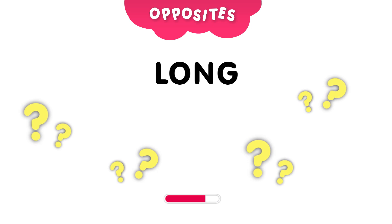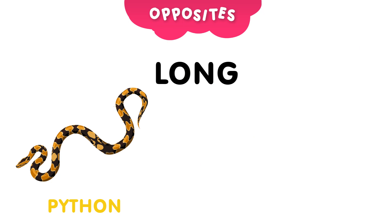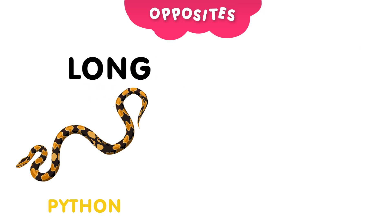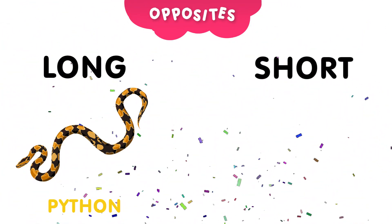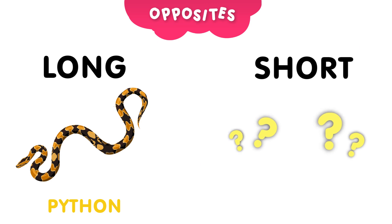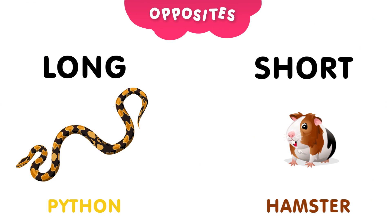We have the word long. Can you guess which animal is long? And the answer is, the python. Pythons can be very long. Now, can you guess the opposite of long? Take 5 seconds to think about it. And the answer is, short. Can you guess which animal is short? And the answer is, the hamster. Hamsters are small and short.